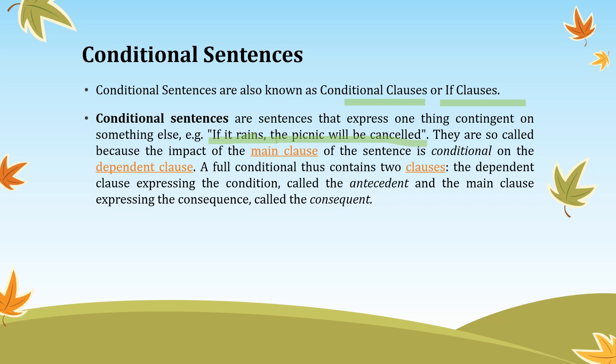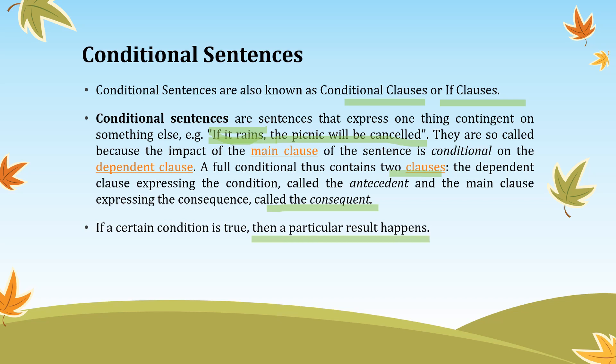Conditional sentences contain two clauses: the dependent clause expressing the condition, or antecedent, and the main clause which expresses the consequence. If a certain condition is true, then a particular result will happen.